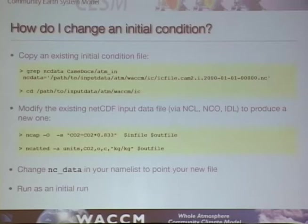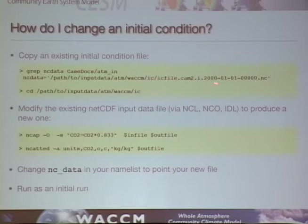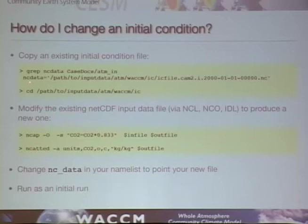You may also need to change the initial condition. In the ATM_in file, you'll see the input file used for F2000 — the cam2.i initial condition file for year 2000. You could tweak that file too — take it and make it consistent with your boundary condition by scaling CO2 by the same scaling factor, and then point NCDATA in your user_nl_cam to your new file.